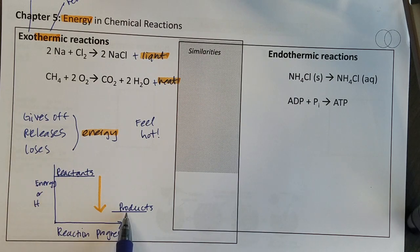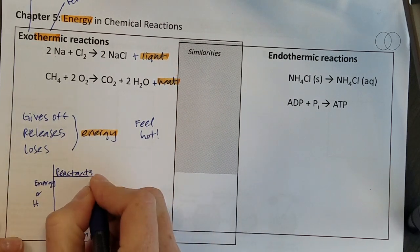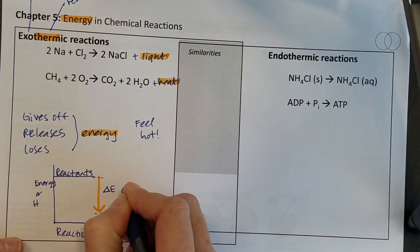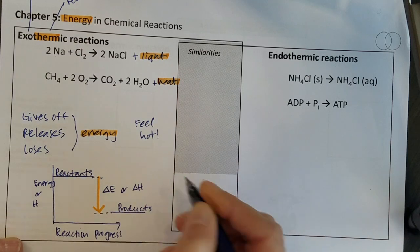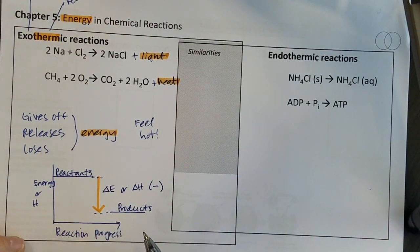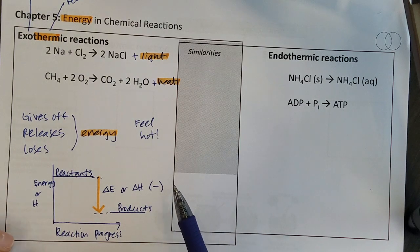We have more energy tied up in the reactants than we do tied up in the products and this is the energy that's lost or the change in energy or the change in heat. We're always going to see a negative sign, it's like if you lose money that's a negative thing, here we're losing heat.